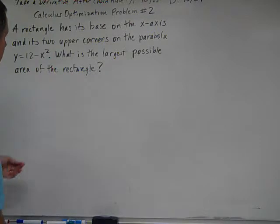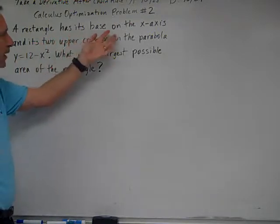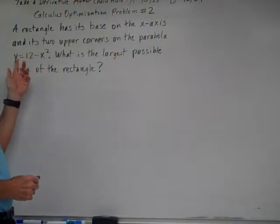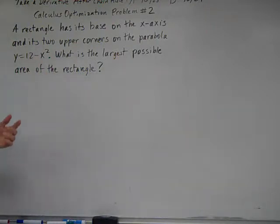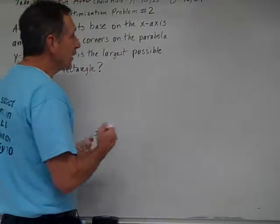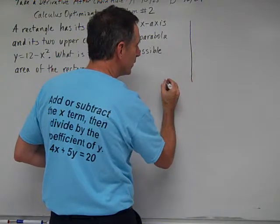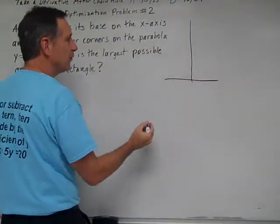Calculus optimization problem number two. A rectangle has its base on the x-axis and its two upper corners on the parabola y equals 12 minus x squared. What is the largest possible area of the rectangle? And like I do in most problems, I can draw a picture of the situation.